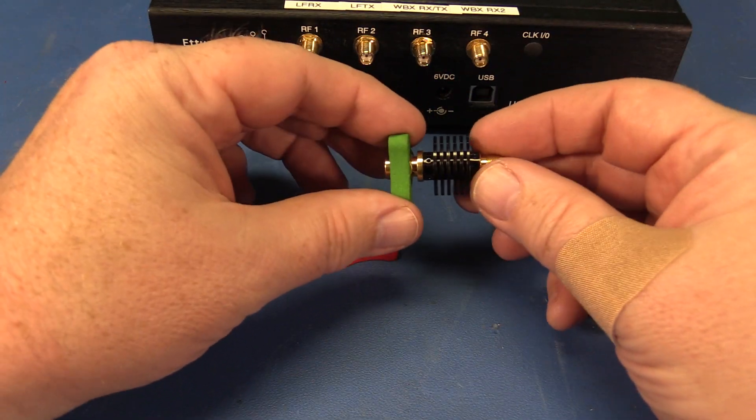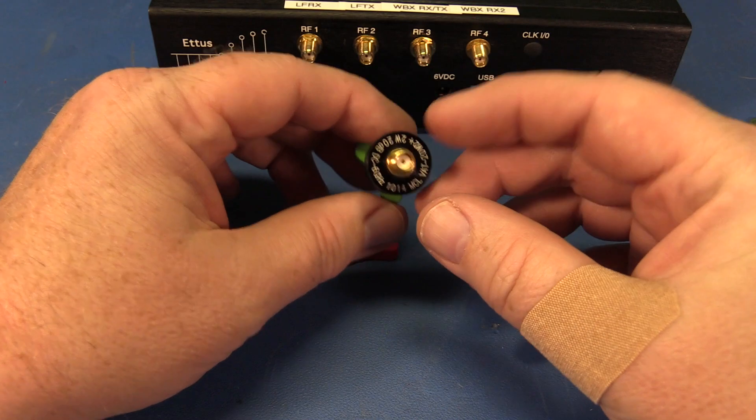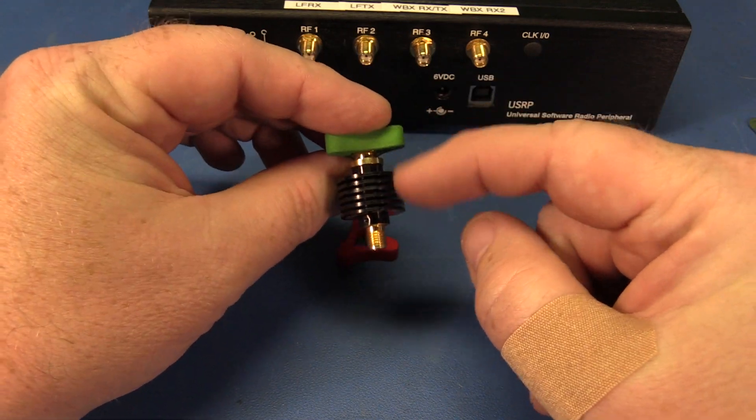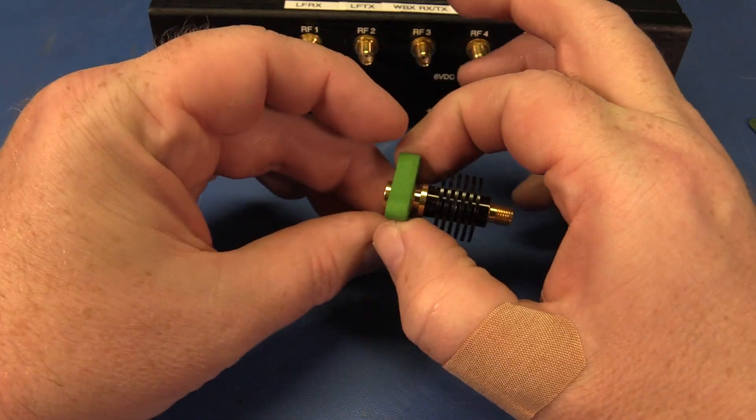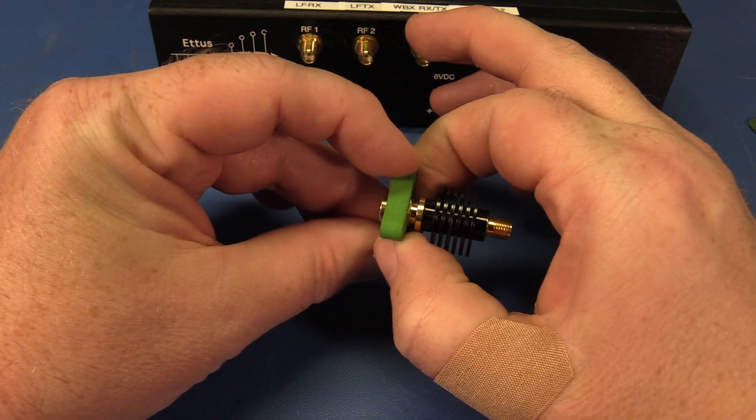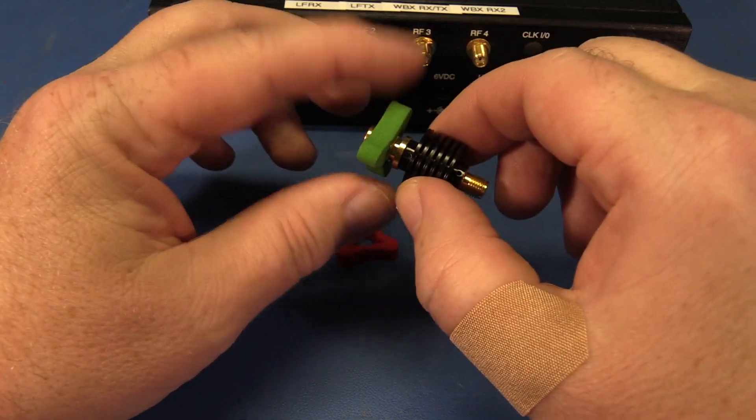I put one on this mini circuits SMA attenuator, which has large cooling fins that can make it hard to get a good grip on the SMA connector behind it. The knob helps out with that.